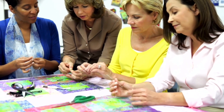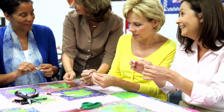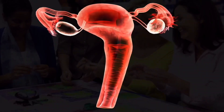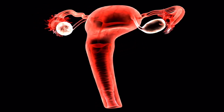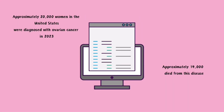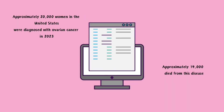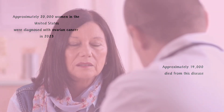Although most cysts are benign, meaning non-cancerous, the risk of ovarian cancer greatly increases with age and is more commonly seen in postmenopausal women. Doctors believe this is due to the shift in balance of the hormones estrogen and progesterone once the ovaries begin to stop making them. According to the National Cancer Institute, approximately 20,000 women in the United States were diagnosed with ovarian cancer in 2023, and approximately 14,000 died from this disease.